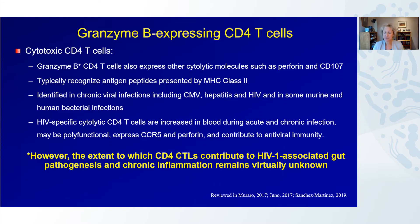Granzyme B-expressing CD4 T cells have been reported in a number of different settings, and primarily they've been reported to be cytotoxic CD4 T cells, because they also tend to express other cytolytic molecules such as perforin and CD107. They're often described as recognizing antigenic peptides that are MHC class II restricted, and they've been identified in chronic viral infections as well as some urine and human bacterial infections. In the setting of HIV infection, HIV-specific cytotoxic CD4 T cells have been shown to be increased in the blood during acute and chronic infection, described as polyfunctional and expressing CCR5 and perforin, and in some cases contributing to antiviral immunity.